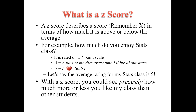So what's a z-score? A z-score describes a score — x being any kind of raw or individual score — in terms of how much it's above or below the mean, the average. For example, if I asked how much do you enjoy statistics on a seven-point Likert scale, one being 'a part of me dies every time I think about stats' and seven being 'I just heart stats,' let's say the average rating for my stats class is a five. With the z-score, you could see precisely, accurately, how much more or less like the average in my class you are than the rest of my students.